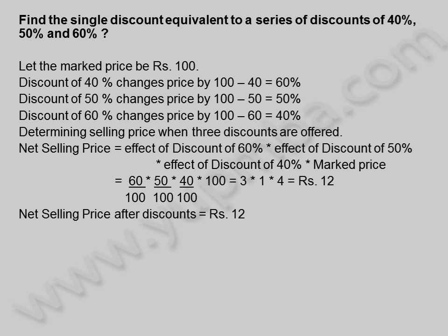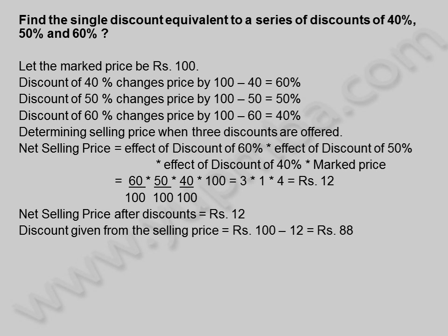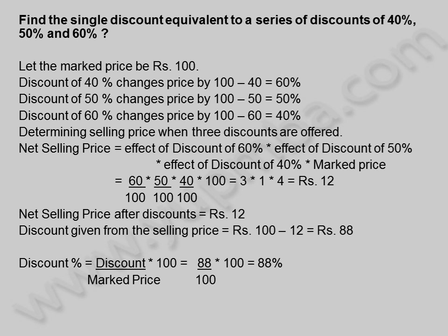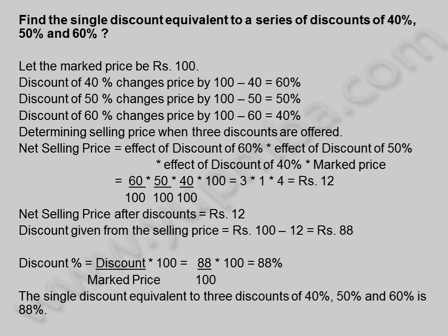Net selling price after discounts is equal to 12 rupees. Discount given from the selling price is equal to 100 minus 12 rupees, is equal to 88 rupees. Discount percentage is equal to discount by marked price into 100, is equal to 88 by 100 into 100, is equal to 88%. The single discount equivalent to 3 discounts of 40%, 50% and 60% is 88%.